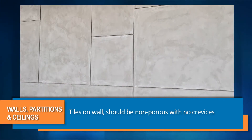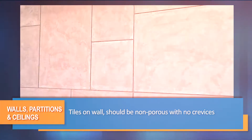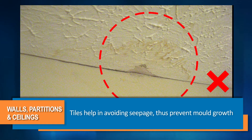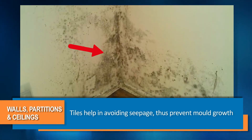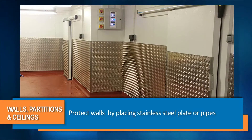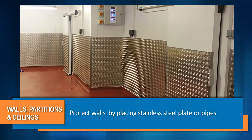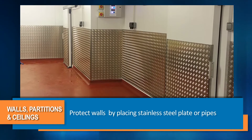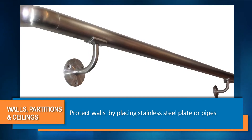If tiles are applied on the wall, they should be non-porous with no crevices. Tiles also help in avoiding seepage, thus preventing mold growth. Walls may be protected from damage caused by moving trolleys by placing stainless steel plates or pipes.